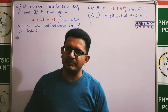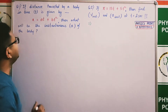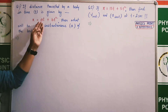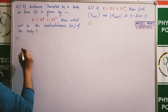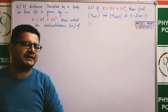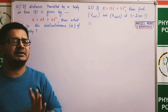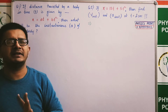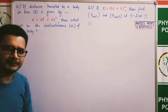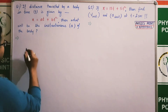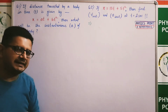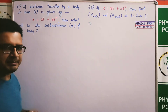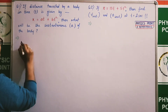पहला numerical example: माल लीजिए displacement इस equation से explain किया गया है। Instantaneous acceleration क्या होगा? यह ध्यान रखना है कि जब instantaneous की बात करते हैं — चाहे velocity हो चाहे acceleration — उस case में distance और displacement equal होते हैं। तो instantaneous के case में differentiation का process use करना है।